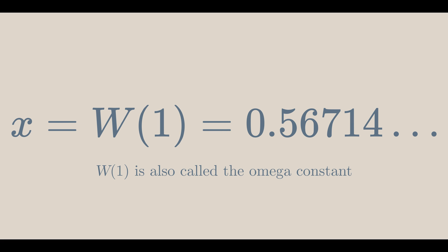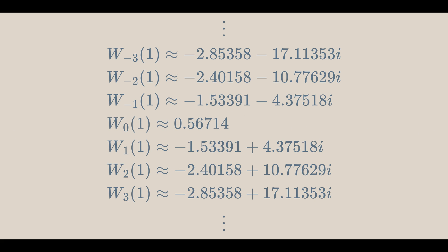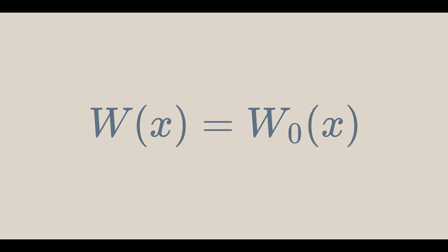However, there are infinitely many solutions to that equation. Each of these solutions are different branches of the Lambert W function, and is denoted in the subscript. If a branch isn't specified, it's assumed to be the principal branch, branch 0.